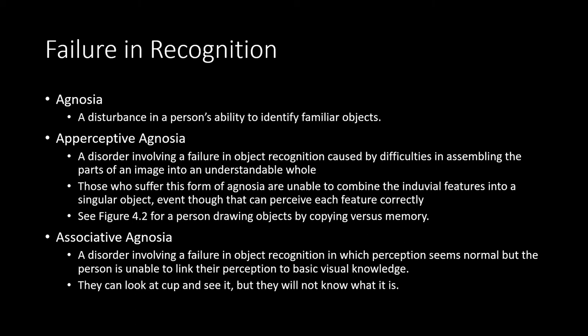The first is apperceptive agnosia — a disorder involving a failure in object recognition caused by difficulties in assembling parts of an image into an understandable whole. People who suffer from apperceptive agnosia are able to see individual features like lines, angles, or colors, but they're unable to merge all of these different items together into a singular object. Imagine looking at a banana and recognizing that it's yellow and slightly curved, but being unable to combine those features into one item.